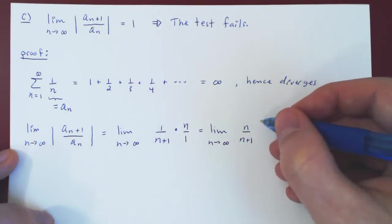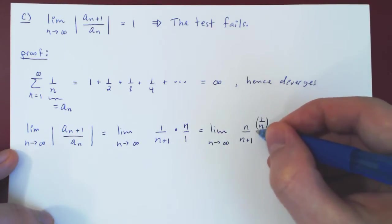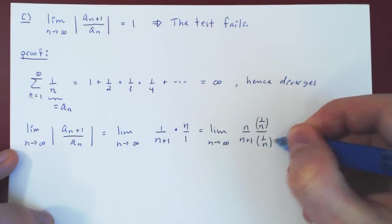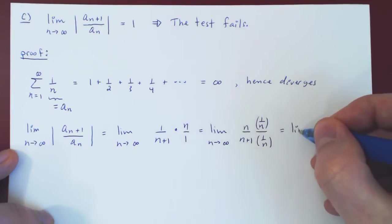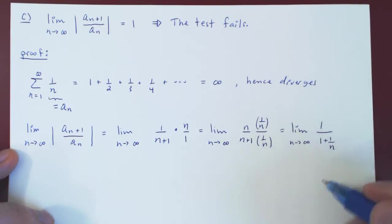Simple limit, multiply top and bottom by 1 over n. Multiply through and you have 1 over 1 plus 1 over n. As n tends to infinity, 1 over n shrinks to 0. We're left with 1 over 1, which is 1.